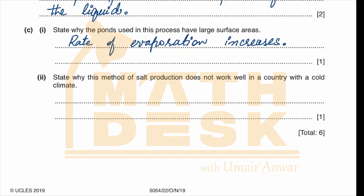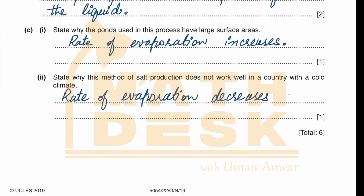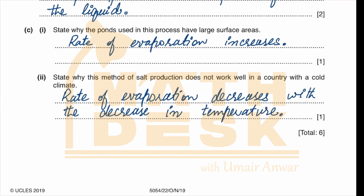State why this method of salt production does not work well in a country with a cold climate. The rate of evaporation decreases with a decrease in temperature. When the temperature rises, evaporation becomes quicker, and when it decreases, evaporation slows down.